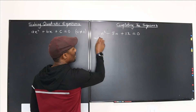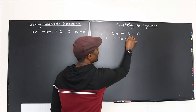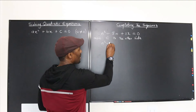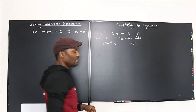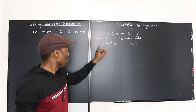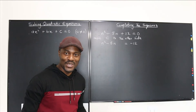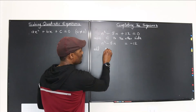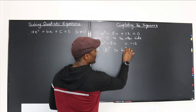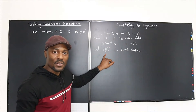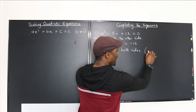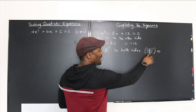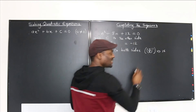For the second example, the first step is to move c to the other side, giving n squared minus 8n equals negative 12. Then check that the leading coefficient is 1 — it is. Now add b over 2 squared to both sides. Here b is negative 8, so negative 8 over 2 is negative 4, and negative 4 squared is 16. Add 16 to both sides.